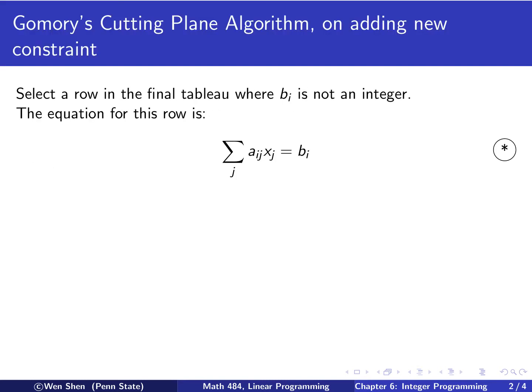Now we go into Gomory's cutting plane algorithm. In particular, we talk about the step of adding a new constraint and how to do that. You select a row in the final tableau where the right-hand side bi is not an integer. So we picked one. We write out the equation for this row: all the coefficients Aij multiplied by xj add up to equal the right-hand side bi.